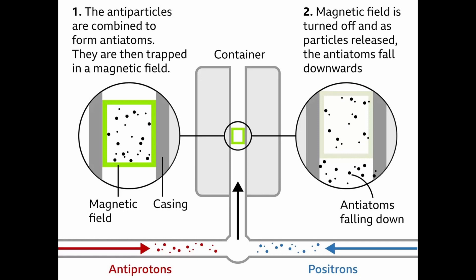Around 100 frigid antihydrogen atoms were placed inside this magnetic trap. With magnets weakening, antimatter particles escaped from both ends.